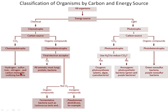Now let's move on to chemoheterotrophs. In chemoheterotrophs, the final electron acceptor in the electron transport chain — which occurs in the membrane of the mitochondria — can either be O₂ or not. If the final electron acceptor is O₂, this group includes all animals, fungi, protists, bacteria, and humans, all of which require O₂.